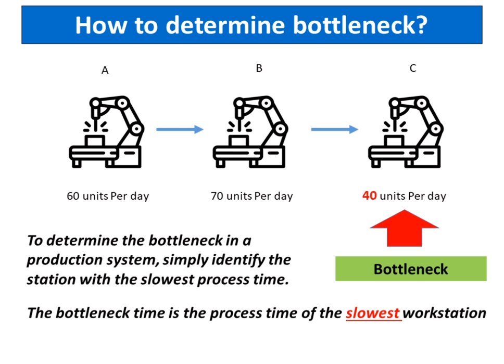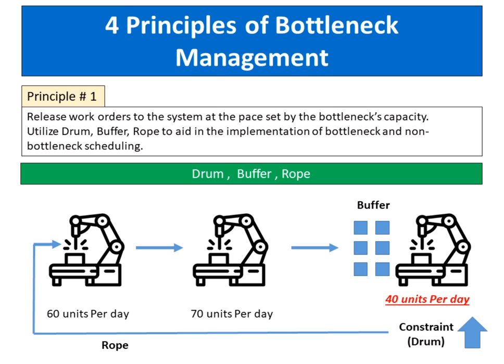The bottleneck time is the process time of the slowest workstation. In this case, process C is our bottleneck — it is the slowest workstation. The managers must focus significant attention on it.